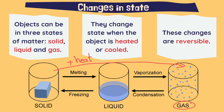And to do the opposite, we need to cool the object, in this case water. To go this way, we need more cool or less heat. To pass from gas to liquid, it is called condensation. And from liquid to solid, it is called freezing. When we are talking about water, it's freezing. And we can also say solidification.